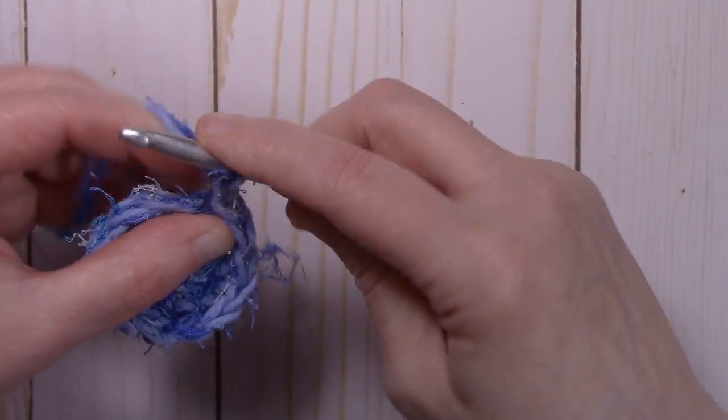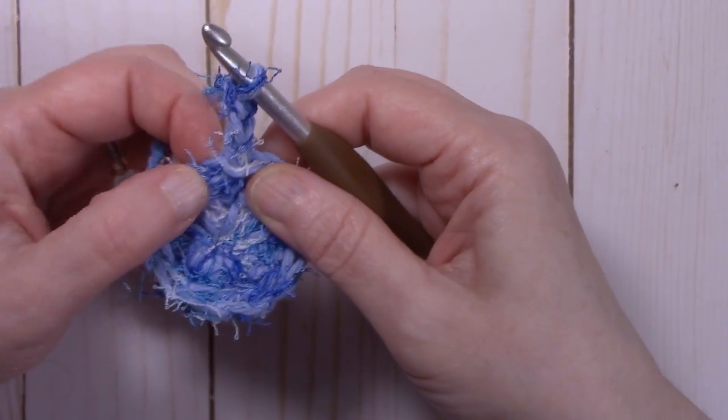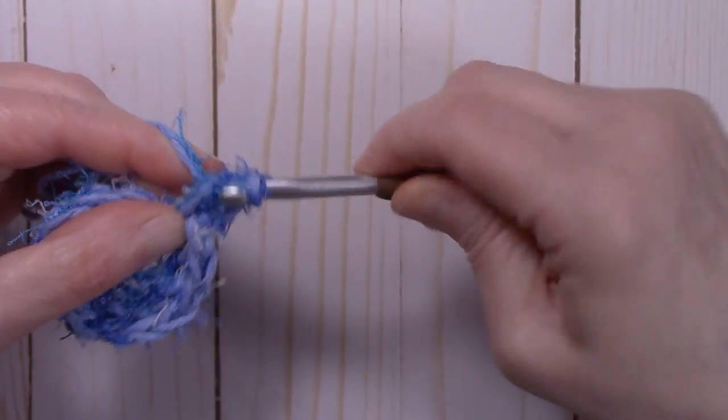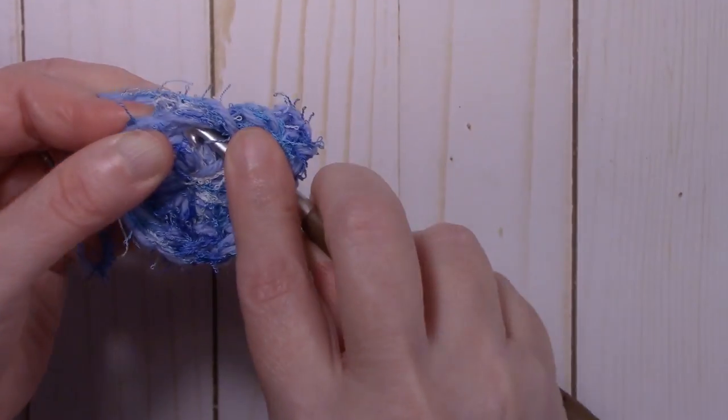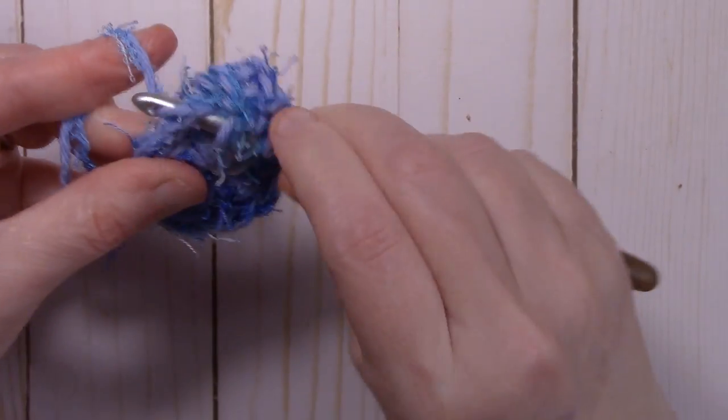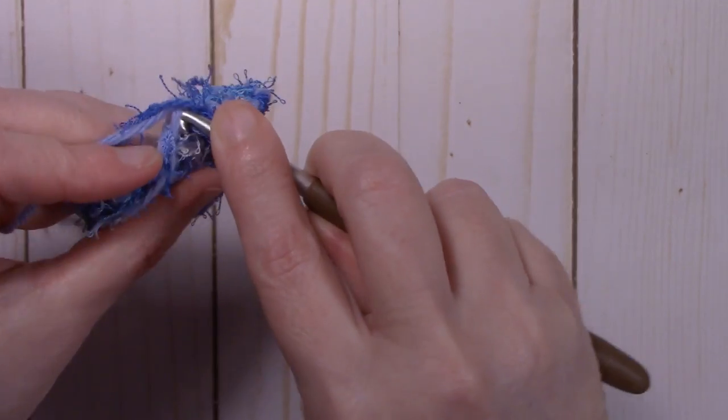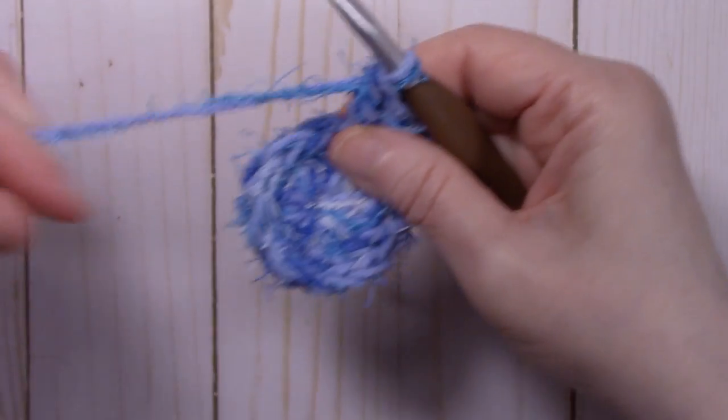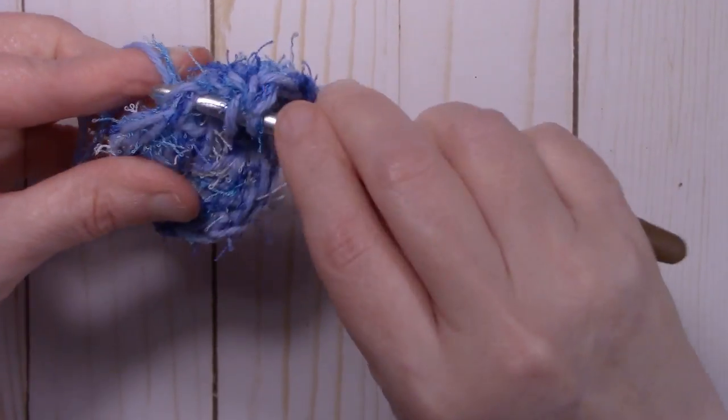To start round two, chain up three. One, two, three. And we're going to put a double crochet right back into that same stitch. Just like that. And two double crochets into each stitch around. Now you might have to just futz with it a little bit to get into that stitch. So that's one and two. Just put a little more yarn out here.